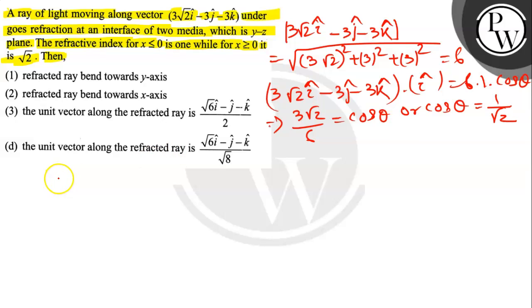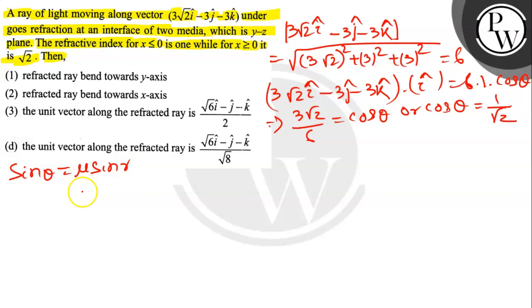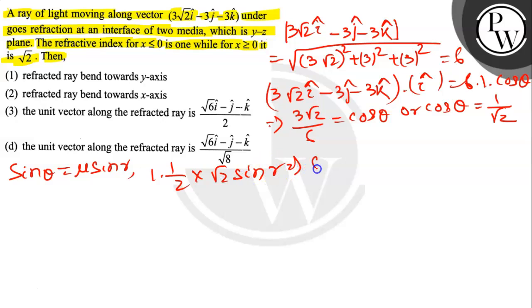Applying Snell's law at point P: sin θ = μ sin r. So 1 × (1/√2) = √2 × sin r, giving sin r = 1/2, therefore r = 30 degrees.